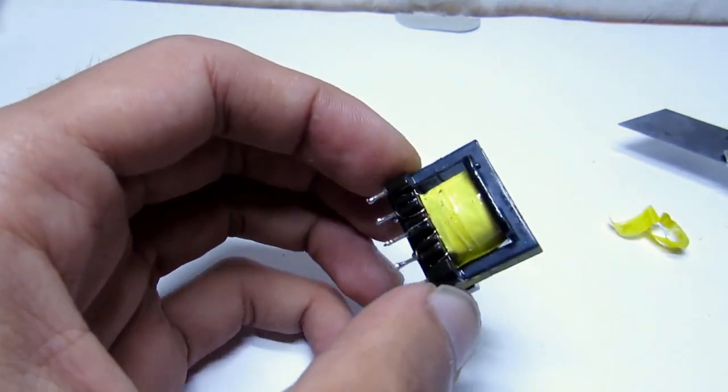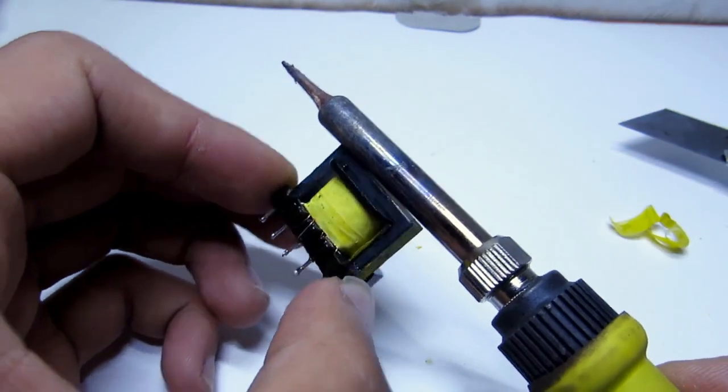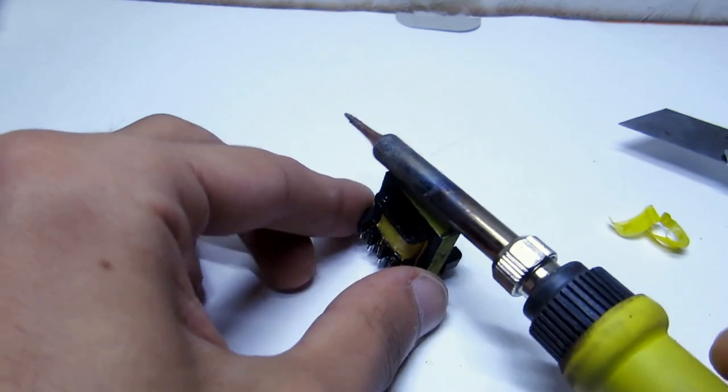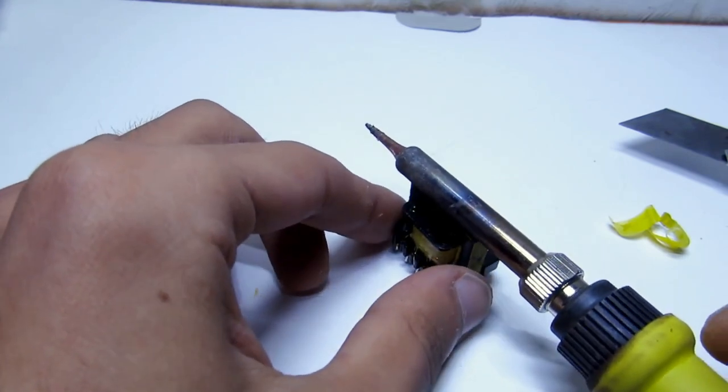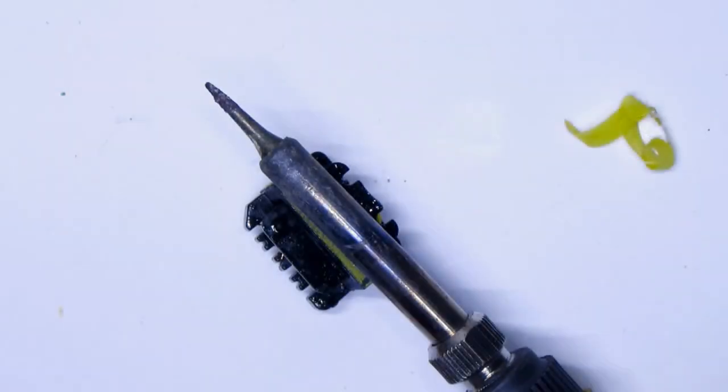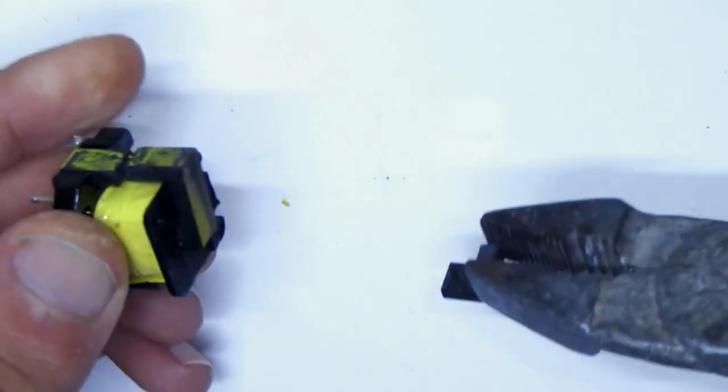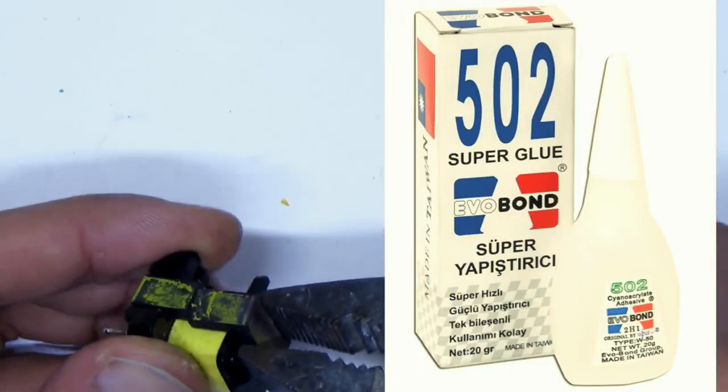The transformer's core halves are bonded to each other. Heat it for about 5 minutes with a soldering iron. The halves separate using pliers. Unfortunately, I broke the core, but it is not fatal. Later, they will be glued with super glue.